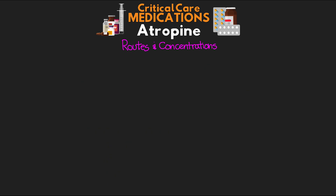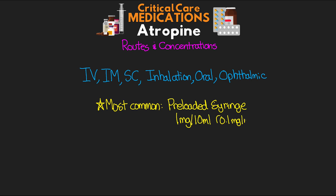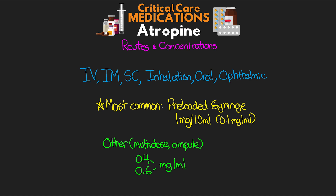As far as routes of administration and concentration, we can actually give atropine IV, IM, subcutaneous, as well as via inhalation, oral, and ophthalmic in some cases. The most common concentration we're going to see is in our preloaded syringe, which has 1 milligram in 10 mLs, giving us a concentration of 0.1 milligrams per mL. Other common concentrations are multidose vials and ampoules that have 0.4 or 0.6 milligrams per mL, but you can actually go even higher on these. For ophthalmic purposes, it's a percentage-based solution, but I'm not going to cover those here.